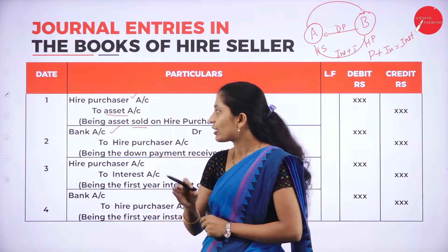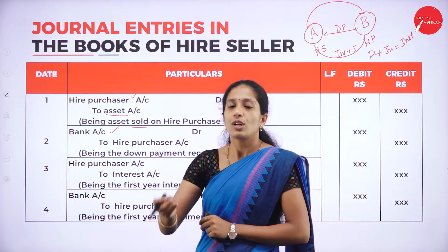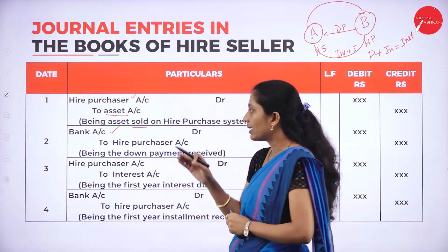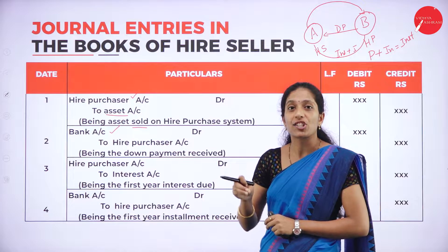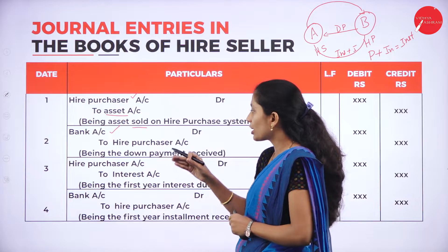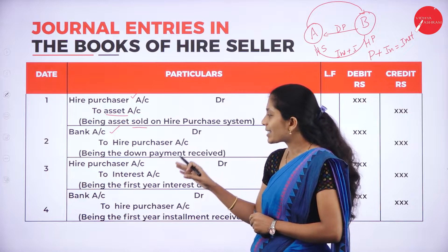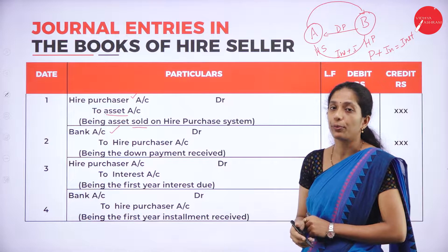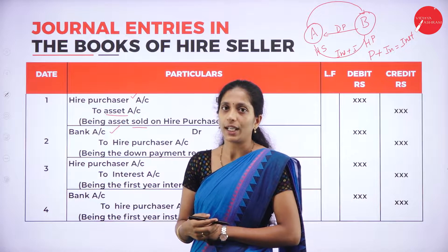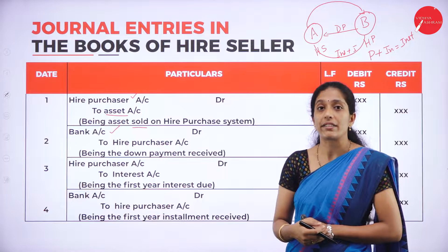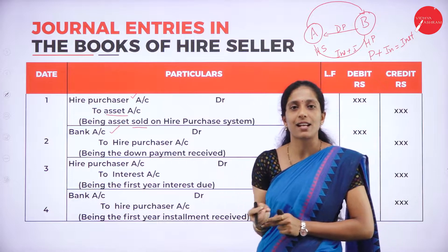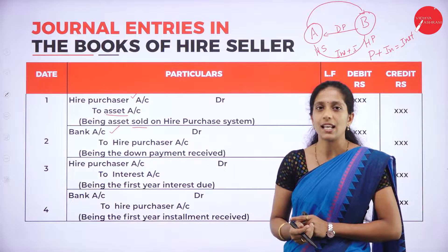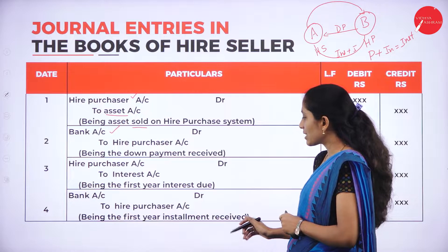These two entries take place on the date of purchase. The third entry is for interest due: Higher Purchaser Account debit to Interest Account — being the first year interest due. The fourth entry is for installment received: Bank Account debit to Higher Purchaser Account — being the first year installment received.